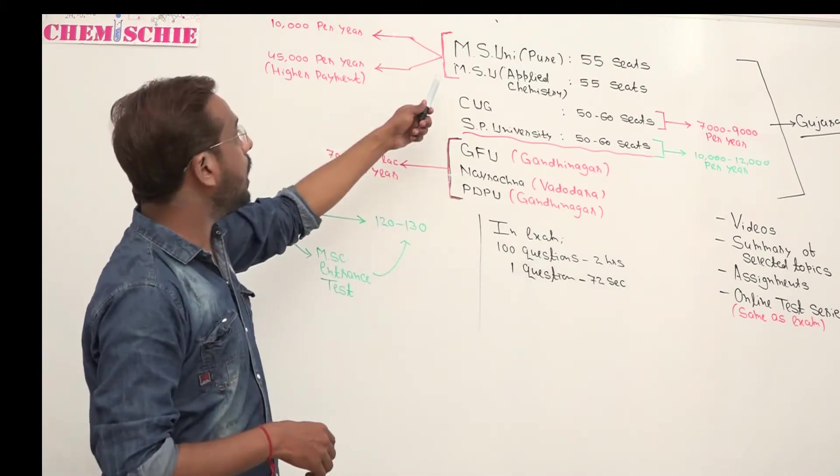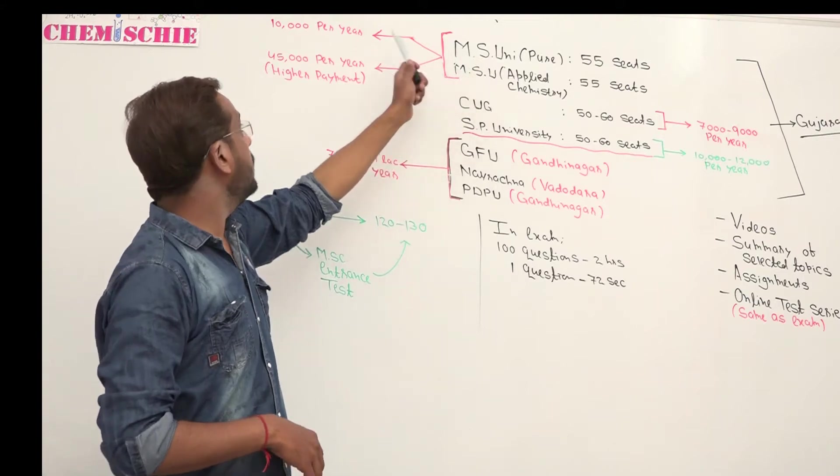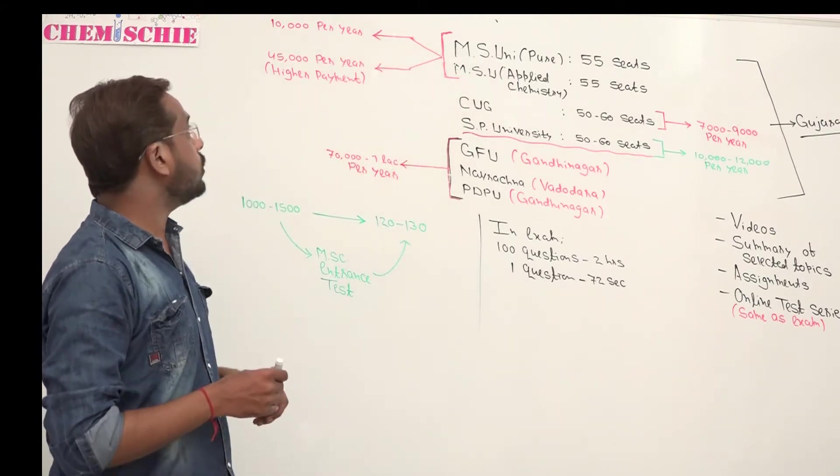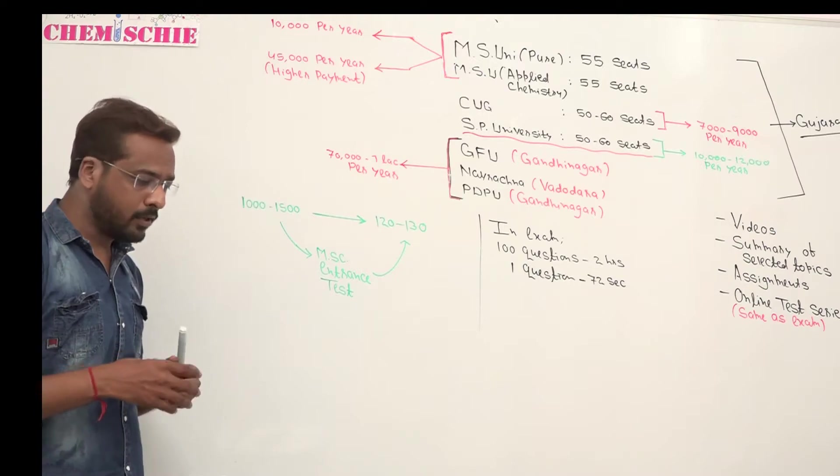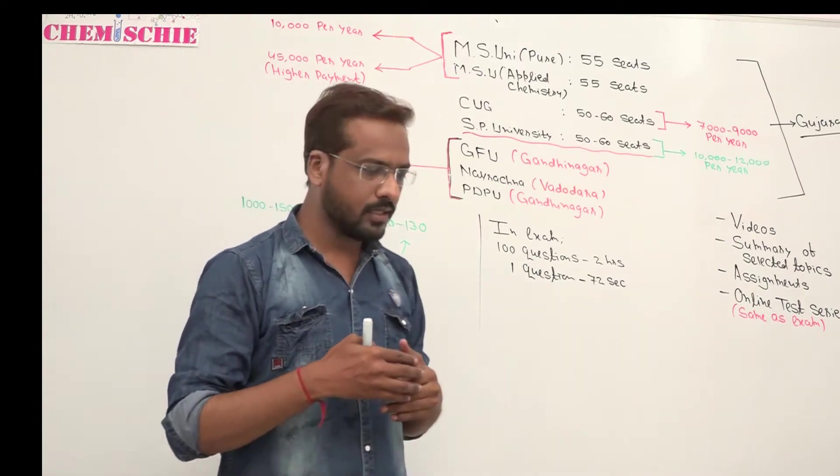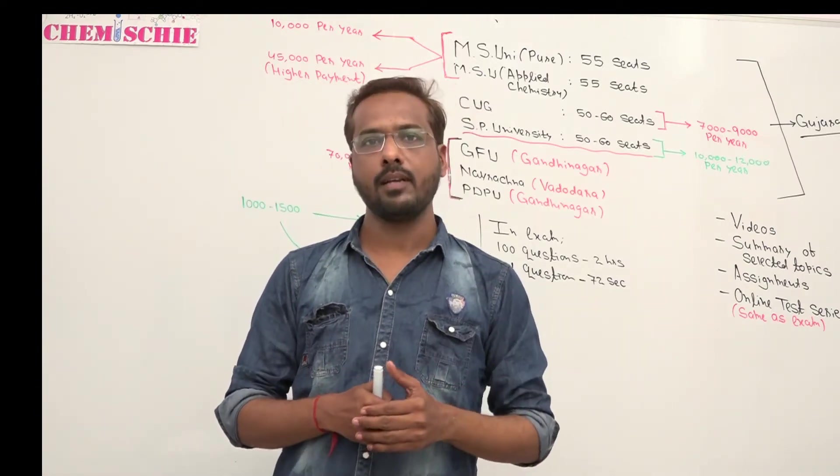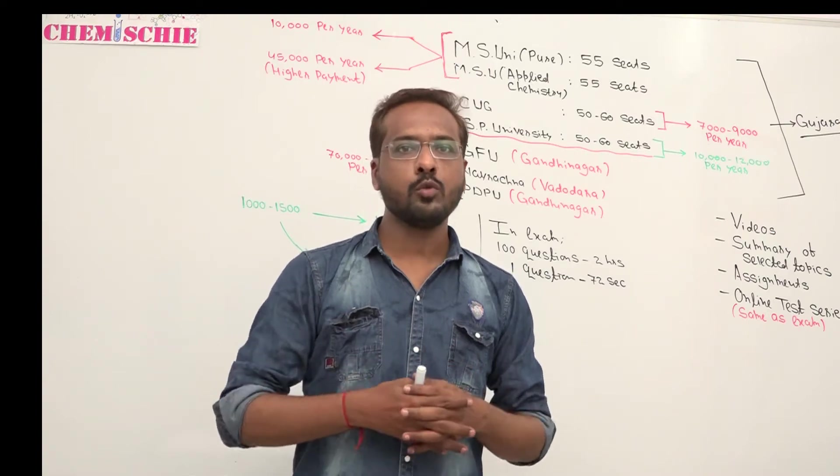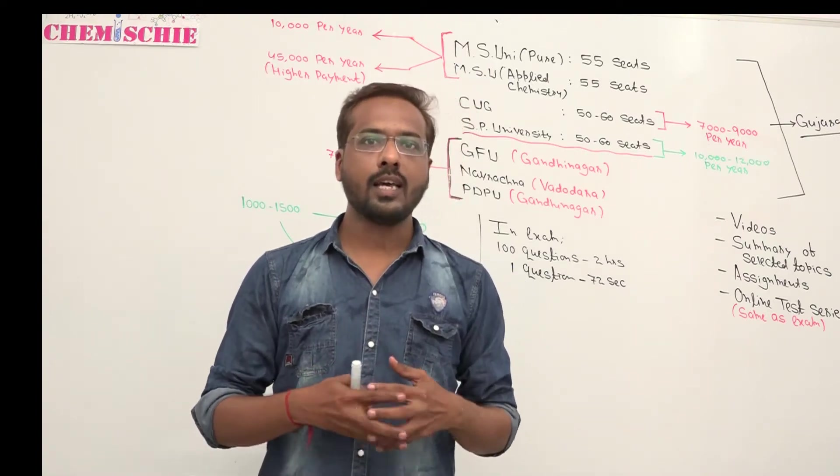For example, in MSC University, the fees is 10,000 per year. There are two parts: government quota and higher limit. If you go to government quota, the fees is 10,000 per year. If you go to higher limit, the fees is 44,000 per year.